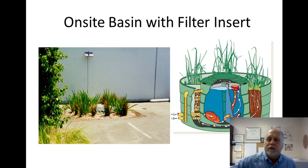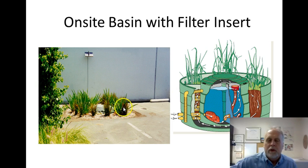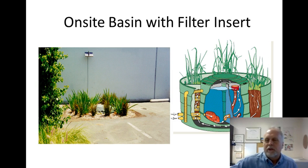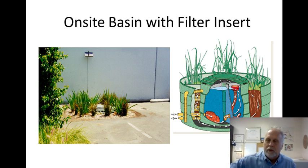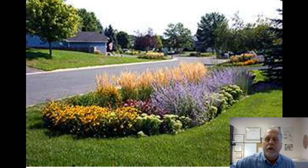Here's an on-site basin — you can see the cross-section of this. Again, it's an engineered system, not just a hole in the ground where you plant stuff. An interesting one was in an arid region where they actually had to water this during the dry season, which seems kind of opposite — you're doing it to preserve water, but to keep it alive in that arid environment they had to water it every now and then. Here's another one off the side of a street where you can run a little water in and make an attractive garden.